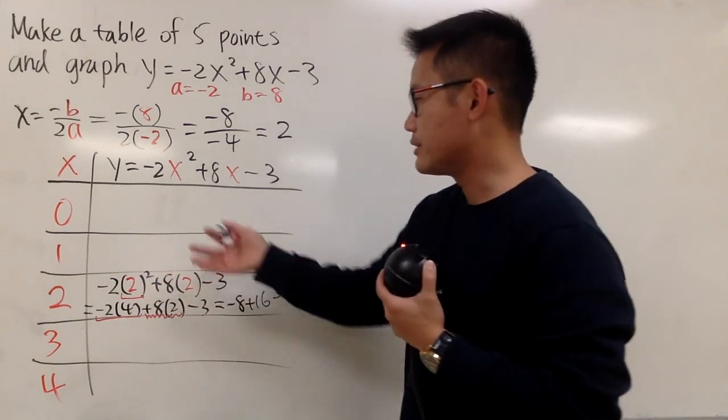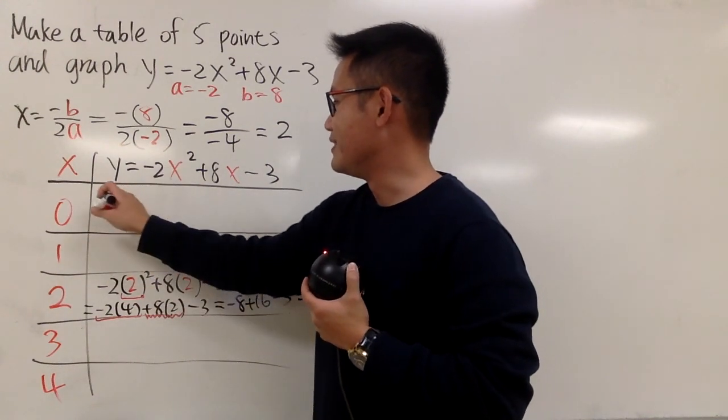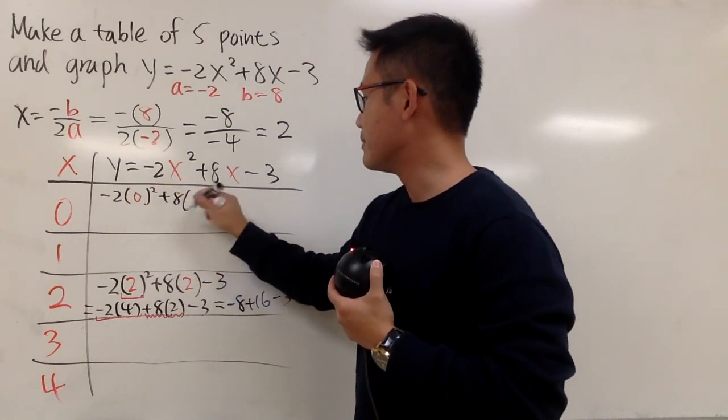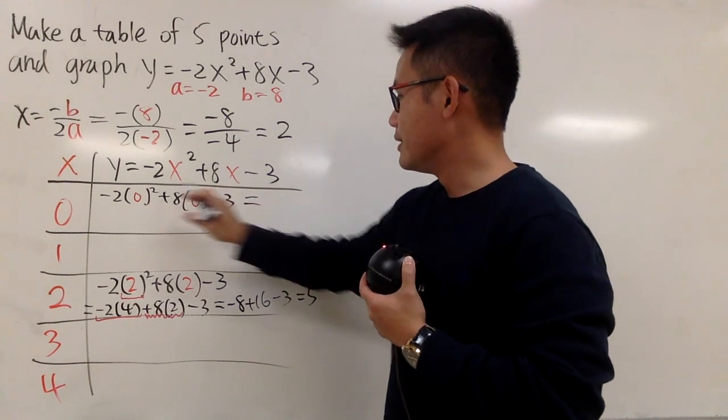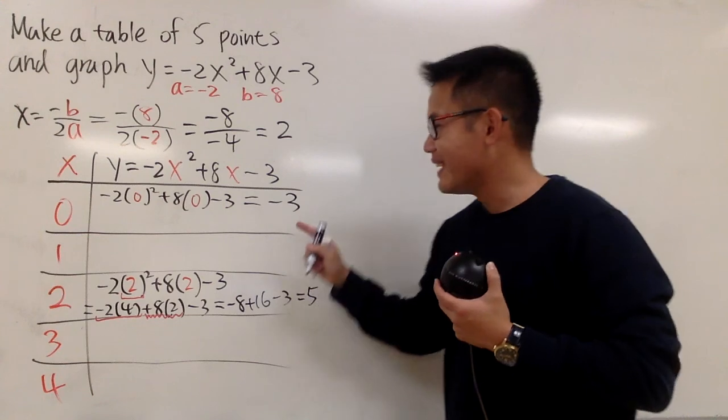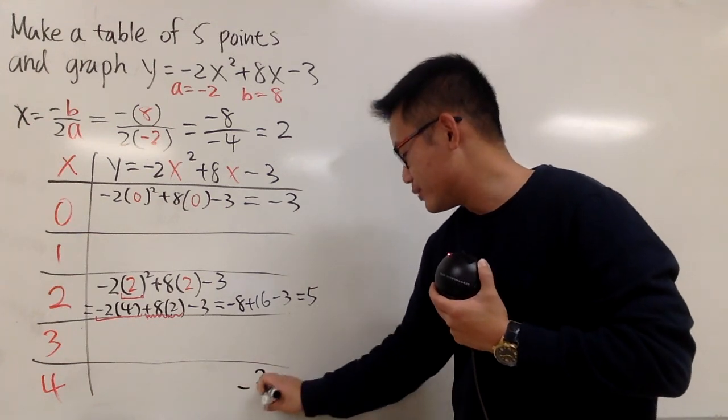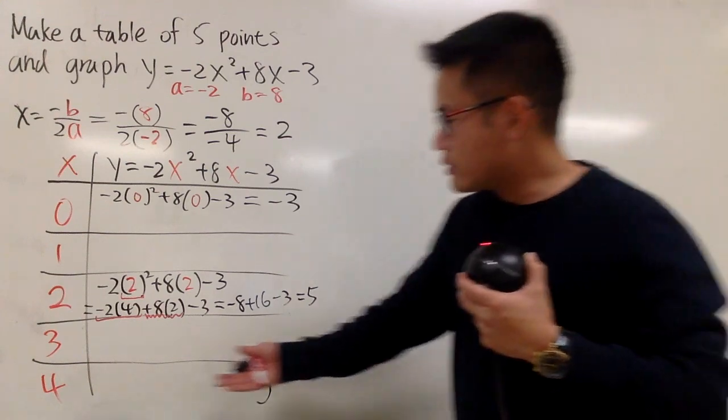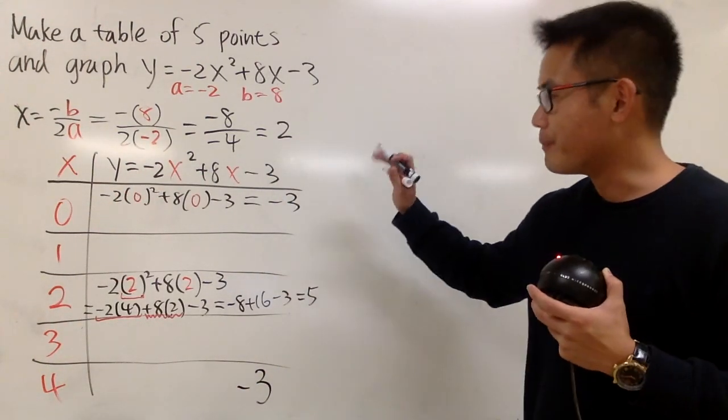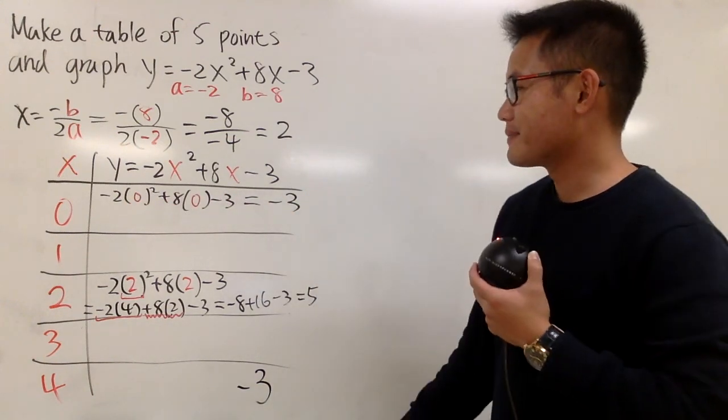And of course, when x is equal to 0 and 1, it's easier to compute. So let's just plug 0 and 1 into here. Let's do the 0 first, because it's easier. So negative 2 times 0 squared plus 8 times 0, and then minus 3. It's really easy, because you just get negative 3, namely the constant term. And then you know this right here will also have negative 3 for the y value. You can also plug in 4 into the x and just work it out to double check, but as long as you are sure with your computation, you know you are doing it right.